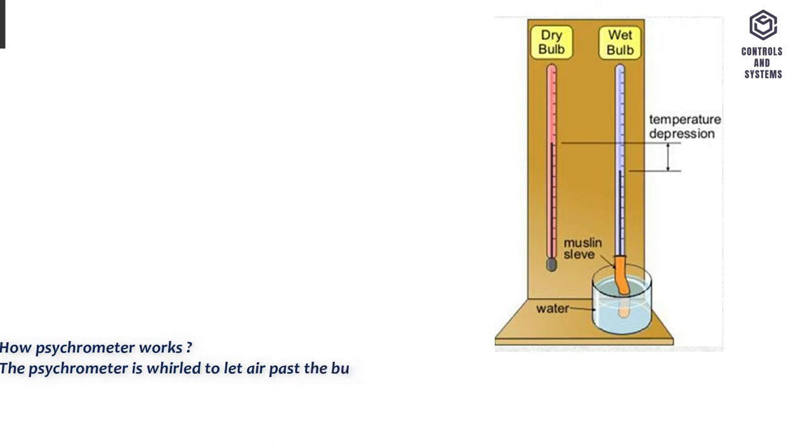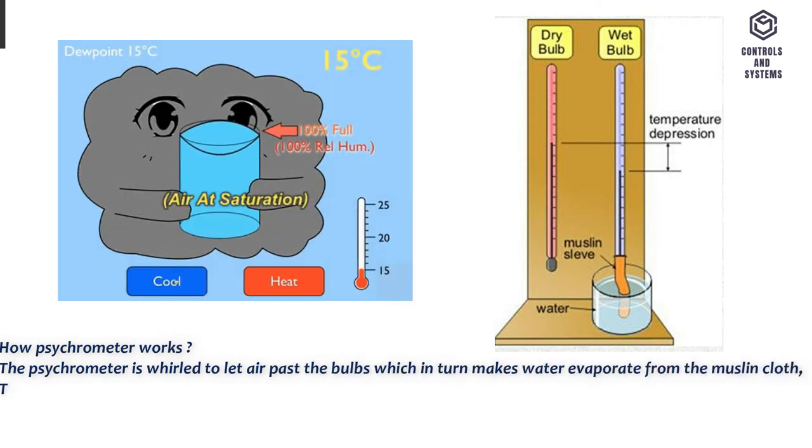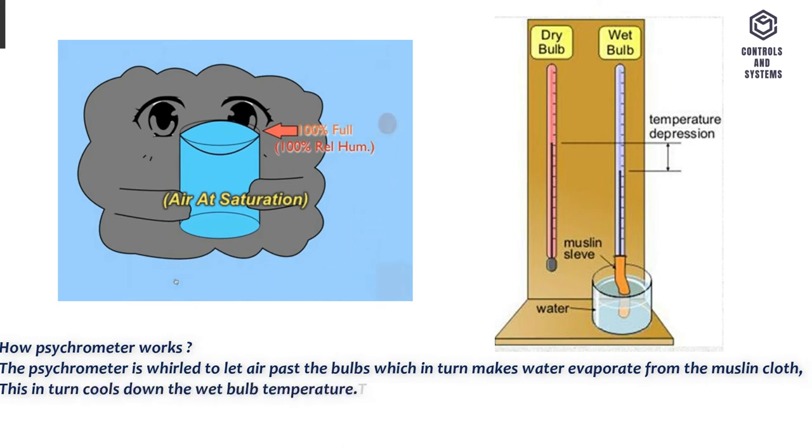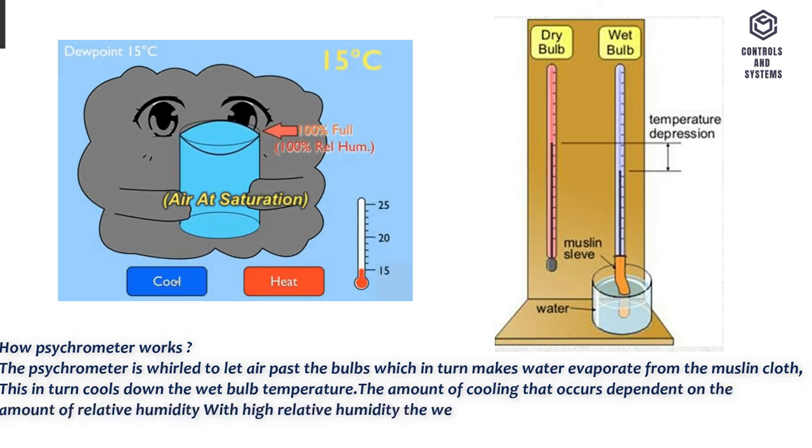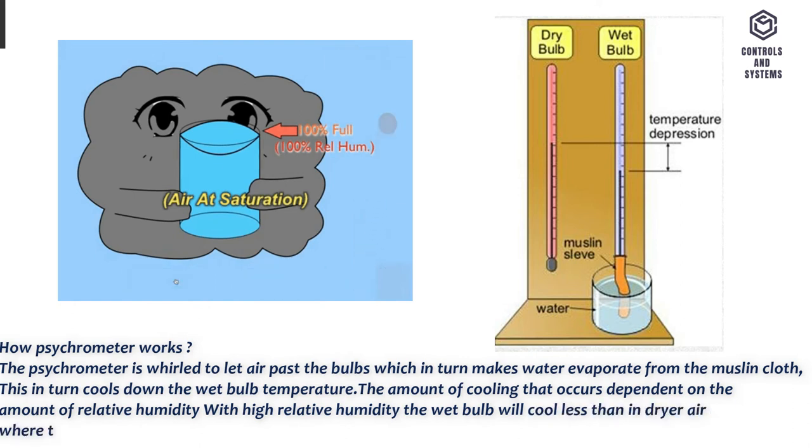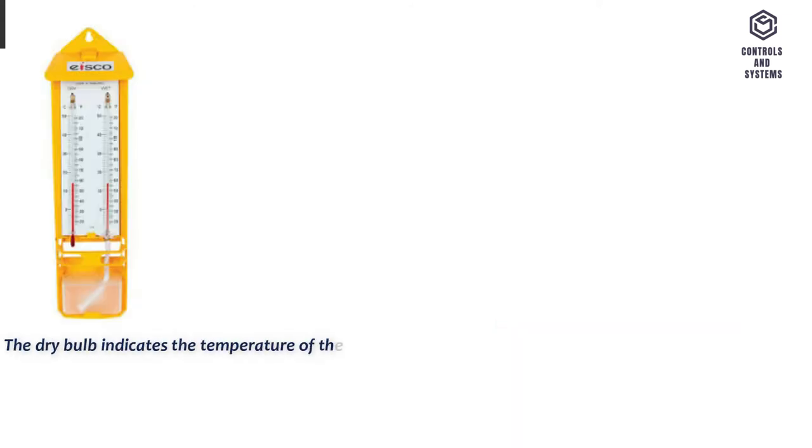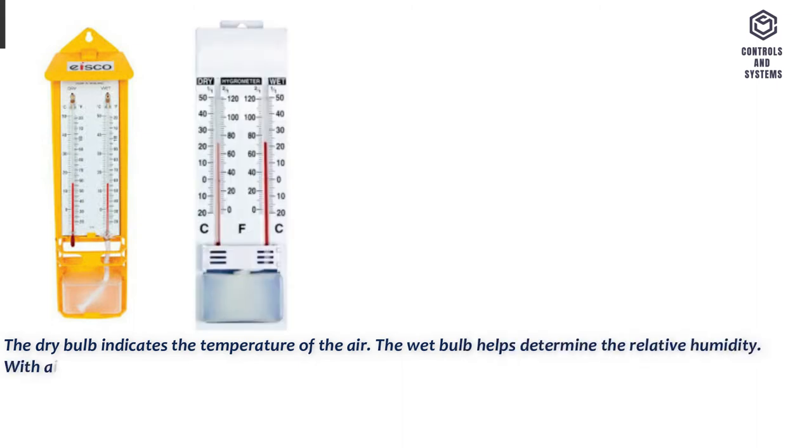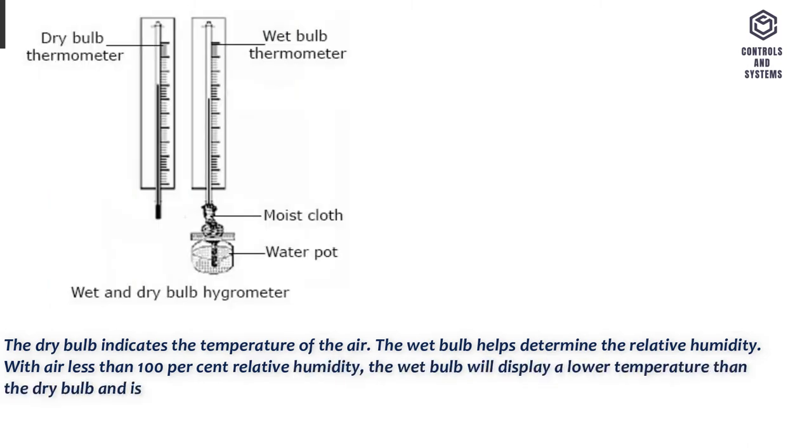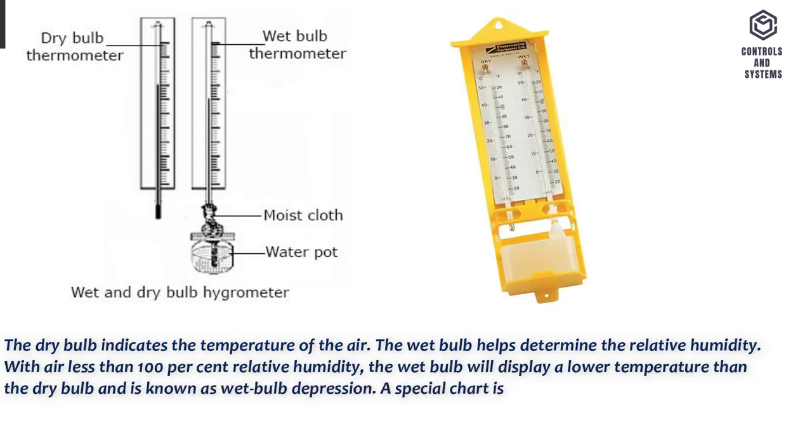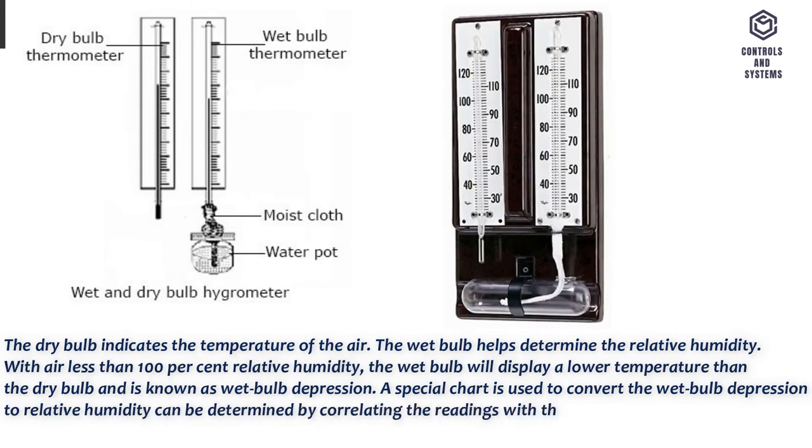How psychrometer works. The psychrometer is whirled to let air pass the bulbs which in turn makes water evaporate from the muslin cloth, this in turn cools down the wet bulb temperature. The amount of cooling that occurs depends on the amount of relative humidity. With high relative humidity the wet bulb will cool less than in drier air where the water in the muslin will evaporate faster. The dry bulb indicates the temperature of the air. The wet bulb helps determine the relative humidity. With air less than 100% relative humidity, the wet bulb will display a lower temperature than the dry bulb and is known as wet bulb depression. A special chart is used to convert the wet bulb depression to relative humidity, which can be determined by correlating the readings with those on a simple slide rule, which is supplied with each instrument.